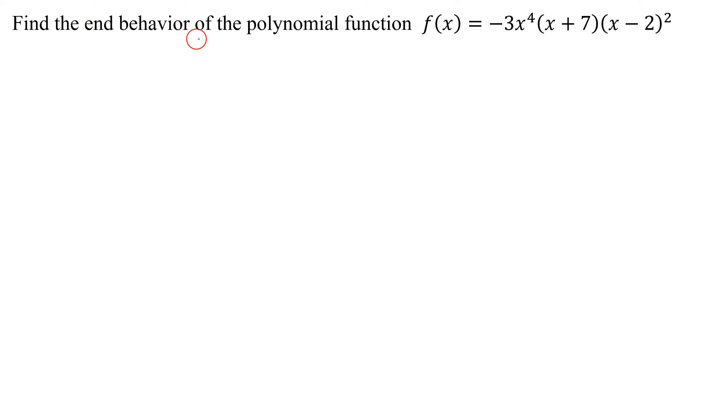The end behavior of a polynomial function is found from the degree of the polynomial and the leading coefficient. That's very easy to find when your polynomial is given in standard form, but we are given the polynomial in factored form.